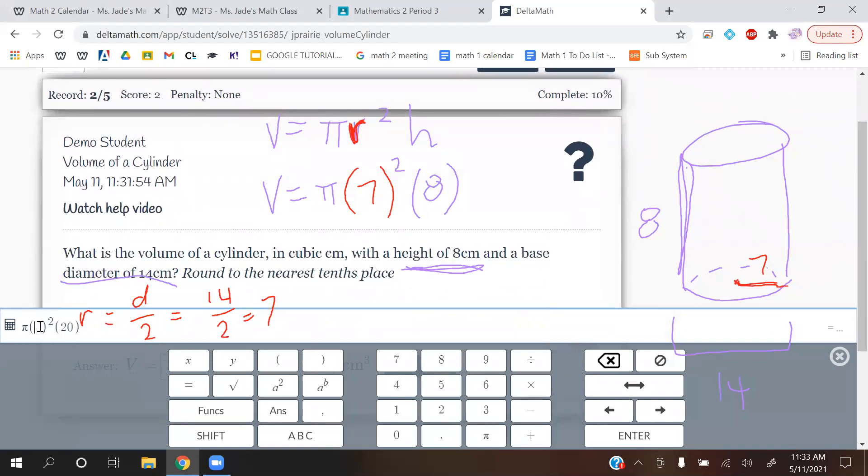π, 7 squared, 8. Wait, yeah, okay. And then that gives us 1231.50432. I'm going to write that out.